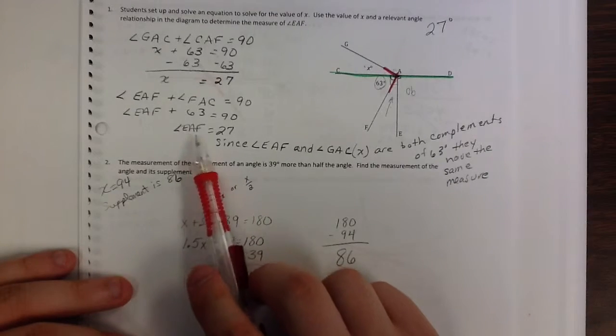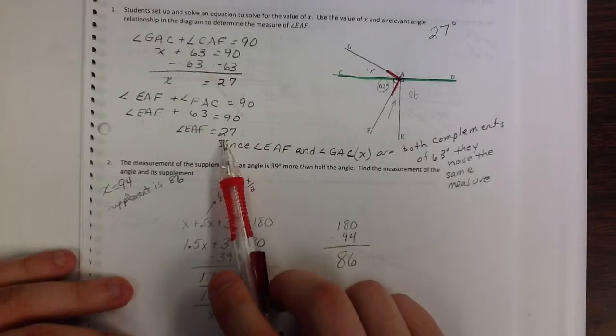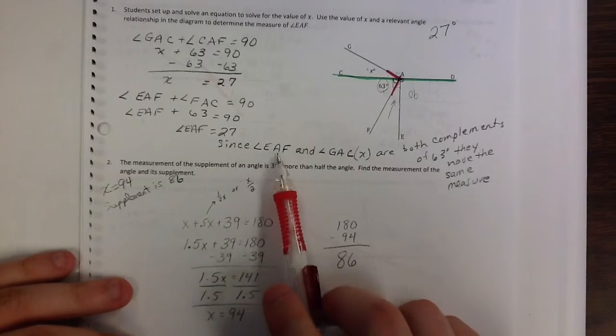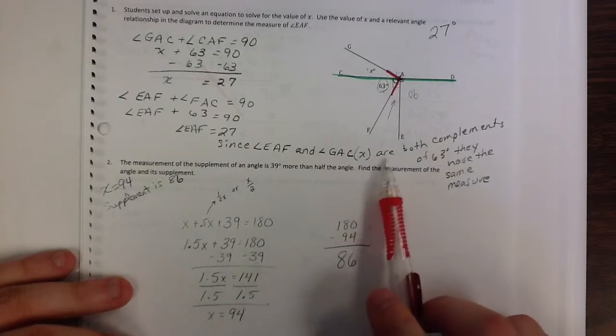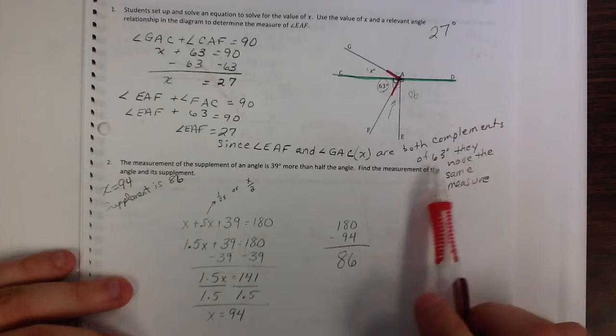So then we find out that angle EAF equals 27 as well. So since EAF and GAC are both complements of 63, there's three specific numbers at number 5, there's three different angles.